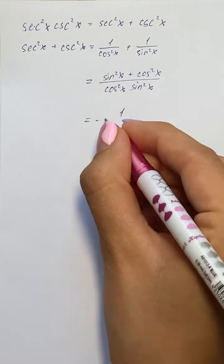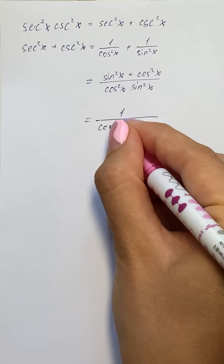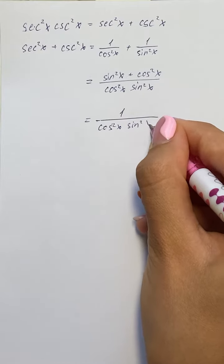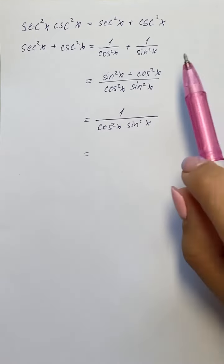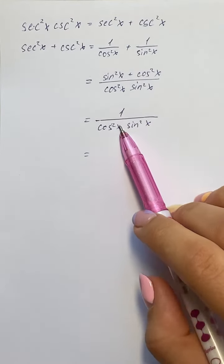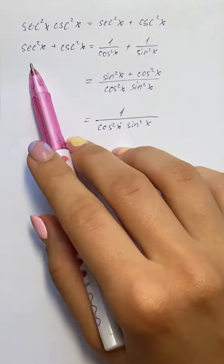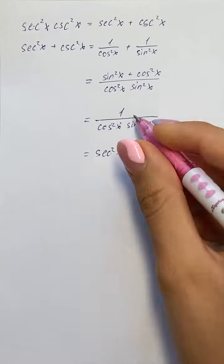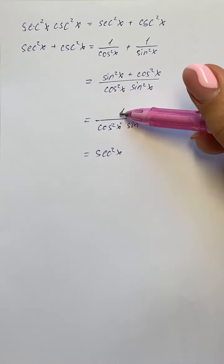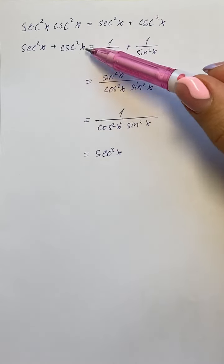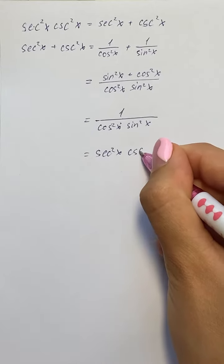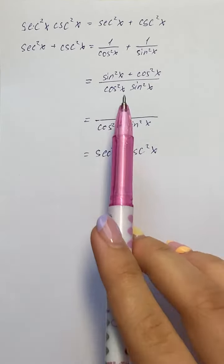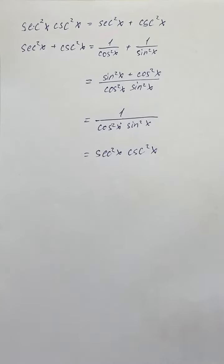So we have one over cosine squared of x times sine squared of x. As noted earlier, one over cosine squared of x equals secant squared of x, and one over sine squared of x equals cosecant squared of x. So we get the left-hand side, and the identity is proved.